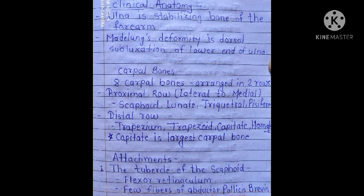Now we will revise the carpal bones, metacarpals, and phalanges. There are eight carpal bones arranged in two rows. The proximal row from lateral to medial is: scaphoid, lunate, triquetral, and pisiform. The distal row contains: trapezium, trapezoid, capitate, and hamate. An important point: the capitate is the largest carpal bone.